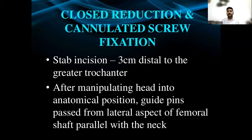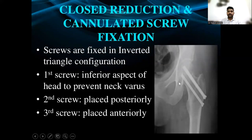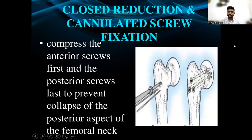After reducing the fracture by the closed method, one needs to fix the fracture with cannulated screws. A strap incision is applied 3 cm distal to the greater trochanter and guide pins are passed from the lateral aspect of the femoral shaft parallel to the neck. Screws are fixed in an inverted triangle configuration — two screws superiorly and one inferiorly. The first screw is placed inferiorly to prevent varus collapse, the second screw posteriorly, and the third anteriorly.